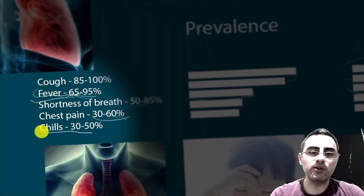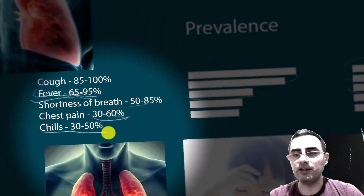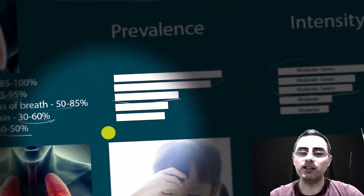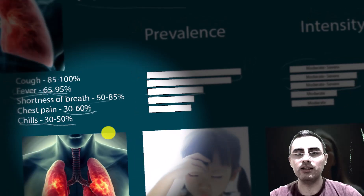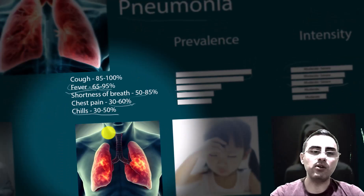And chills — chills occur in 50% of pneumonia cases, and are also moderate in intensity.